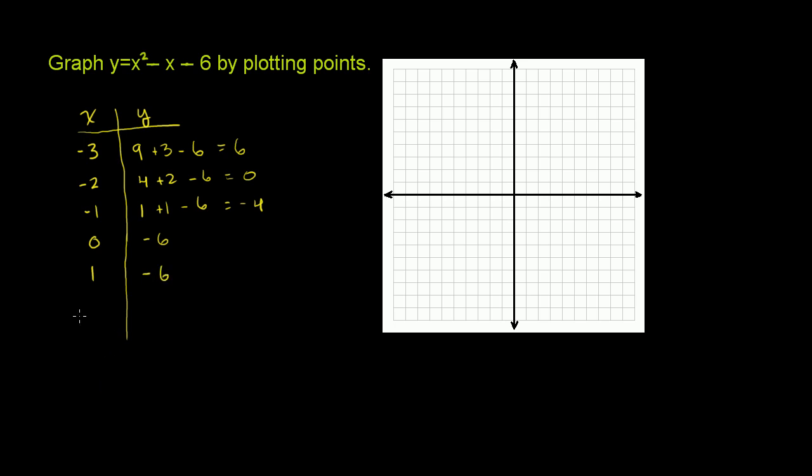And then if we have x equals 2, we have 2 squared which is 4, minus 2, minus 6. So 4 minus 2 is 2 minus 6, which equals negative 4. And then if x equals 3, we have 3 squared which is 9, minus 3, minus 6. Well, that's going to be equal to 0.